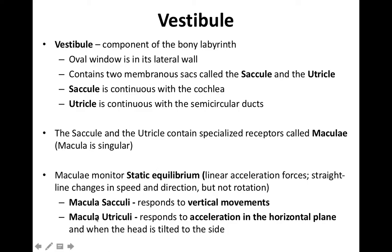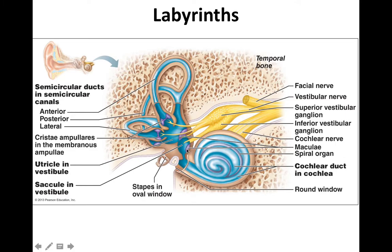The maculae within the saccule, called maculae sacculi, respond to vertical movements — jumping up and down, riding an elevator, or bending down to pick something up. The macula utriculi responds to acceleration in the horizontal plane — walking forwards, backwards, or side to side. Changes in head position can also be monitored by the utricle, so tilting your head to the side or front will cause the maculae within the utricle to respond.